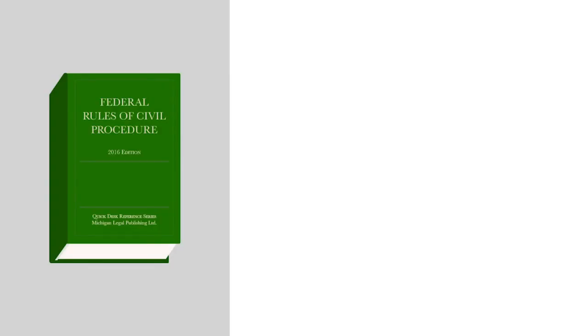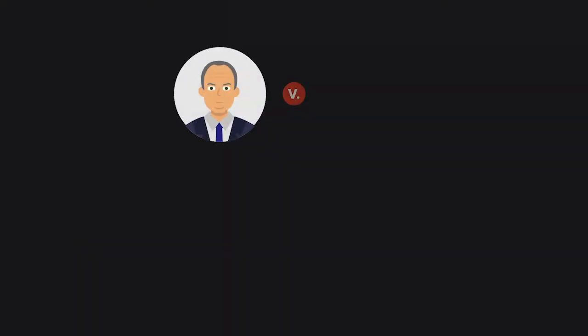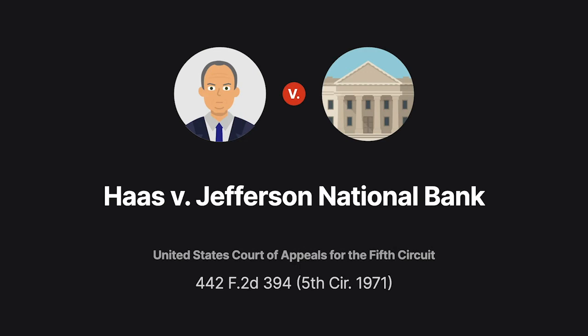The federal rules of civil procedure mandate the joinder of parties to a lawsuit under certain conditions. But what if the mandatory joinder causes the court to lose jurisdiction? As explained in Haas v. Jefferson National Bank, the court must decide whether the suit can proceed or whether the missing party is so important that the case must be dismissed.